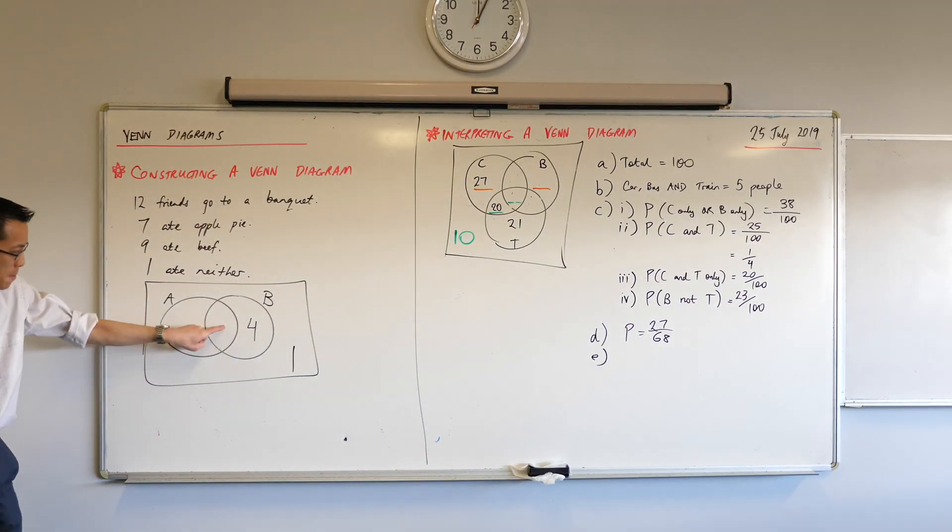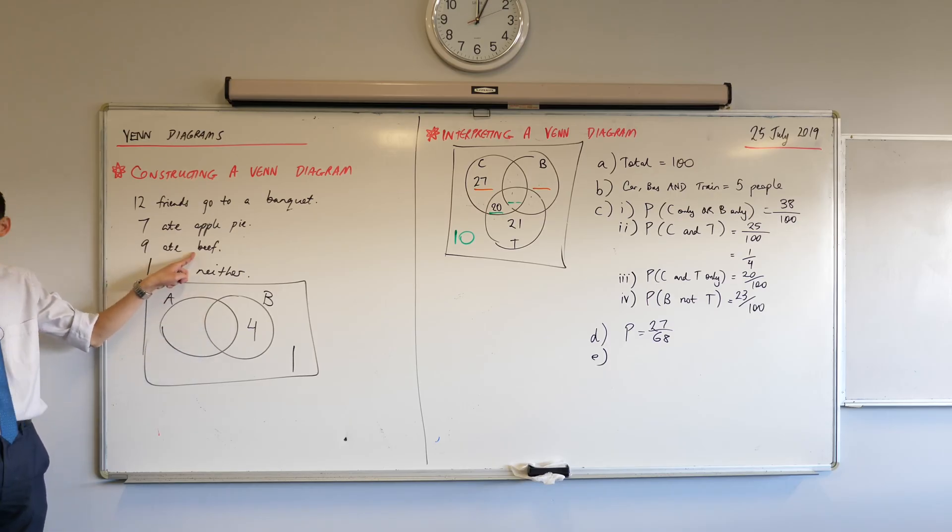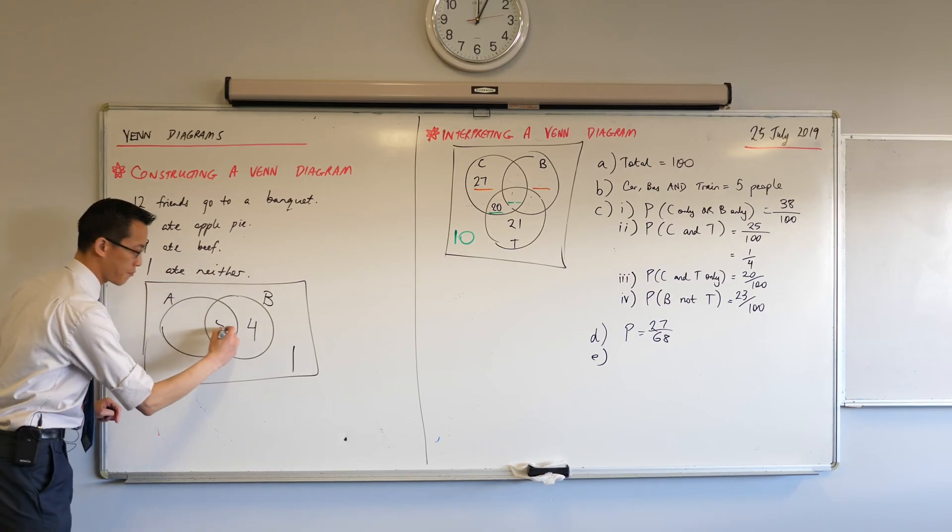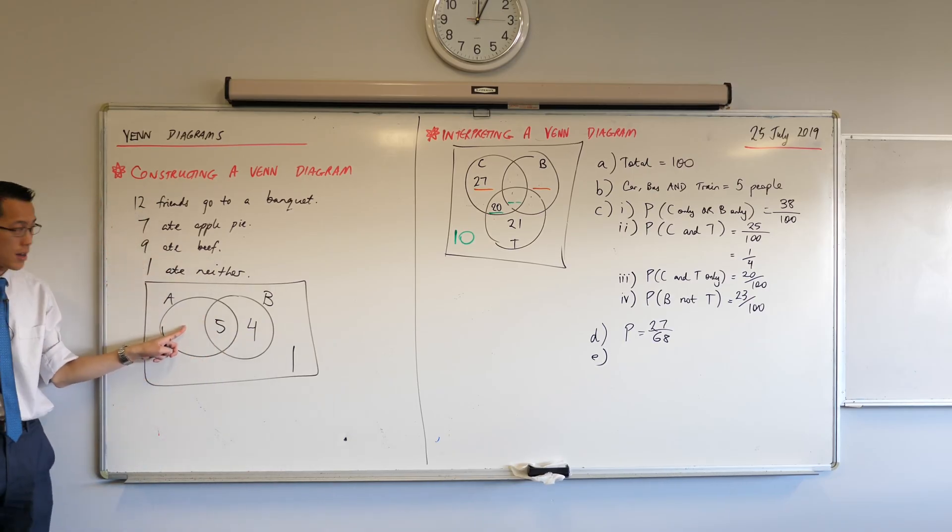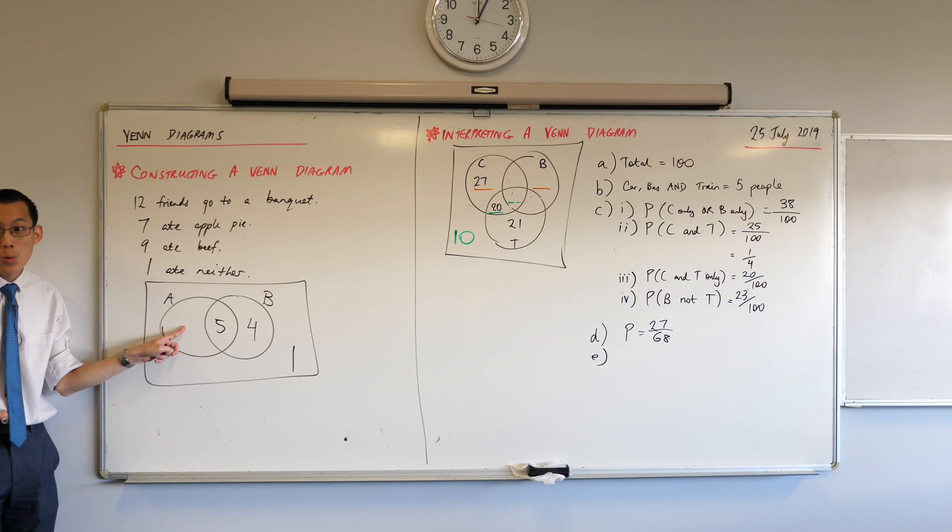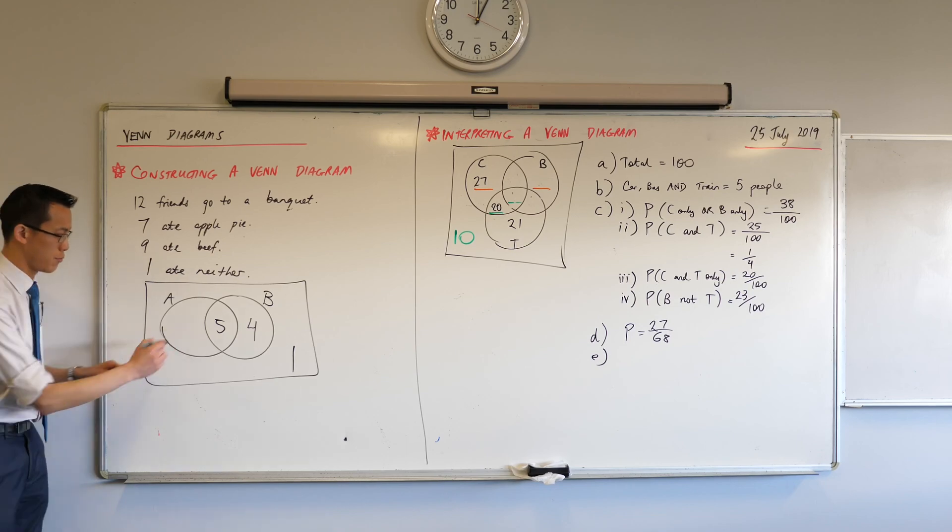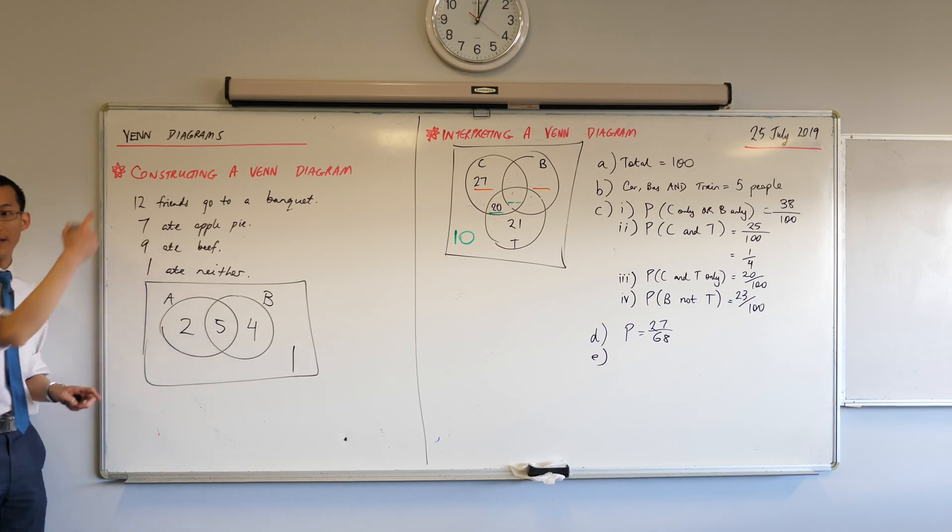How many of the rest of them who ate beef? Yeah, go ahead. It should be 5. It should be 5. Because you want 5 plus 4 to equal 9. And that gives you the last number. How many people ate apple pie only? 2. 2. Because that 2 plus 5 gives you the 7.